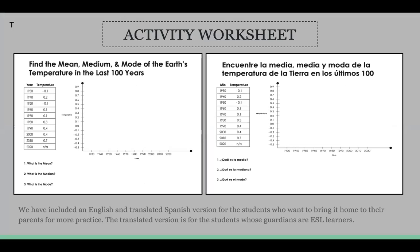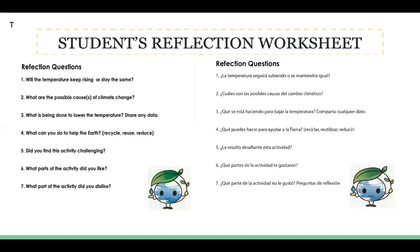For the activity worksheet, we created a worksheet where the student will be able to find the median and mode and graph them out. Looking at the year and temperature, they would graph it, and the questions below will ask them what is the mean, median, and mode. We have included an English and translated Spanish version for students who want to bring this home to their parents for more practice. The translated version is for our ESL learners. Similarly, the student reflection worksheet also has a Spanish translated version. We wanted the reflection worksheet to help us get to know the student better — whether they are having any challenges with the lesson and what they liked and disliked about it.